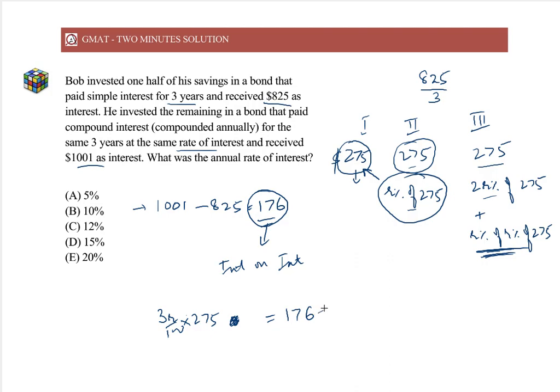Since this is very close to 175, and I know that this is 25 into 11 and this is 25 into 7, what I get is that R percent, R by 100, is equal to 7 upon 33.